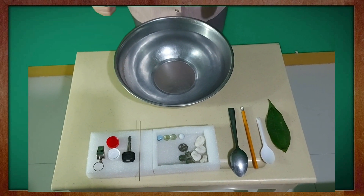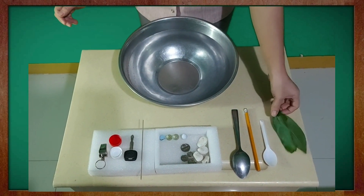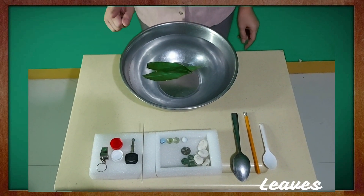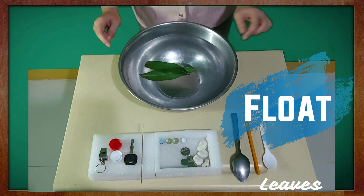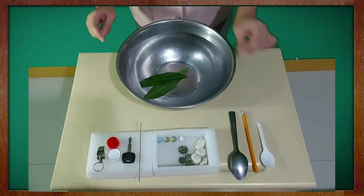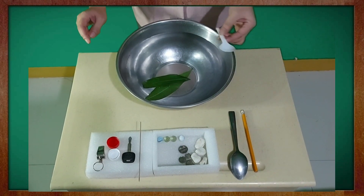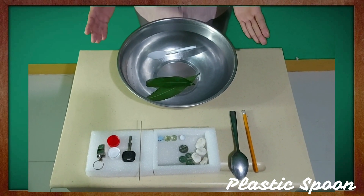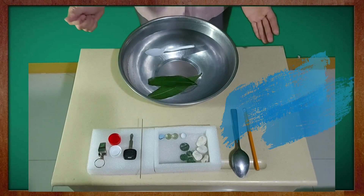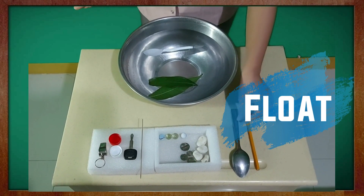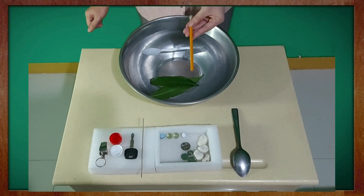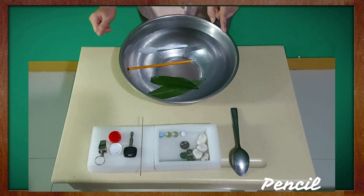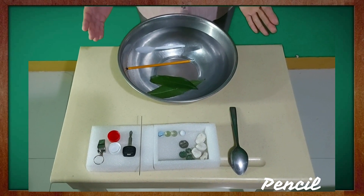Then observe what will happen. Leaves — it floats. Plastic spoon — observe — it floats. Pencil — observe what will happen — it floats.